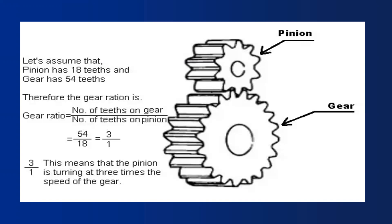This is a very simple and easy concept. Velocity ratio and gear ratio are both the same. The formula is number of teeth on gear to the number of teeth on pinion. Thank you for your valuable time in watching this video.